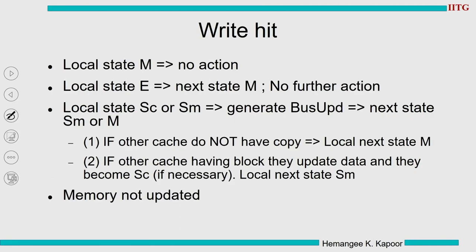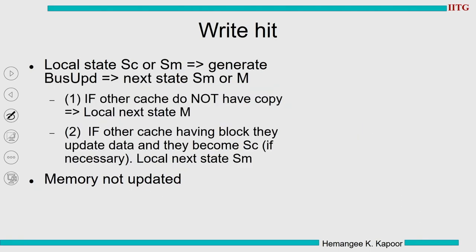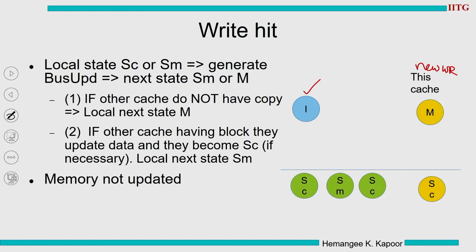On a write hit: if in M, no action needed. If in E, first go to M and start writing without informing others. If the local state is SC or SM, update the data but send the contents onto the bus using a bus update transaction. After this, move to SM or M — go to M if no other sharers, go to SM if there are other sharers. Memory is not updated.